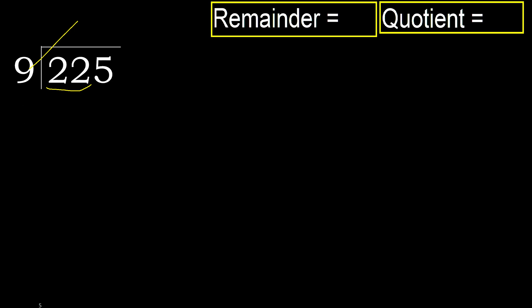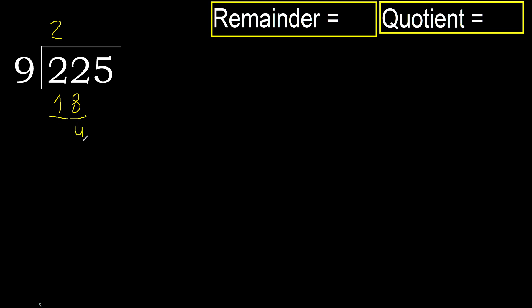9 multiplied by 3 is greater, multiplied by 2 is 18. 18 is not greater. 22 minus 18 is 4, next.